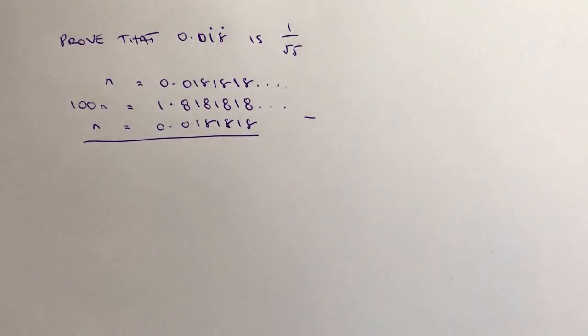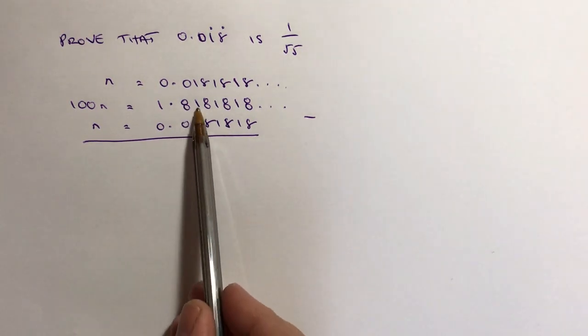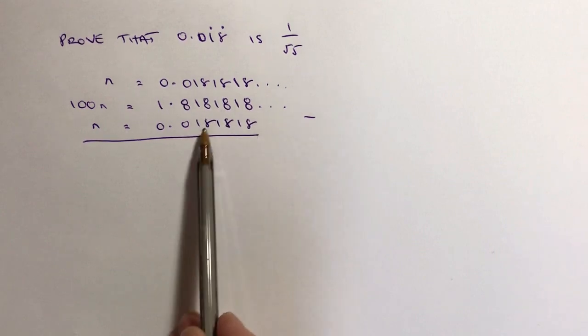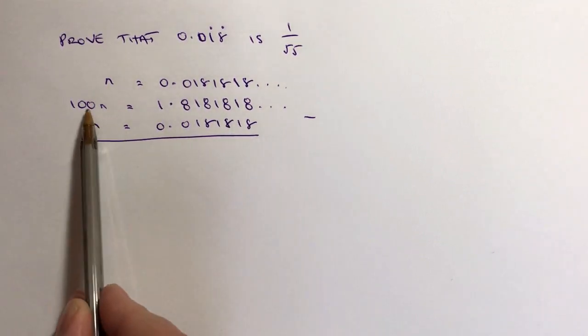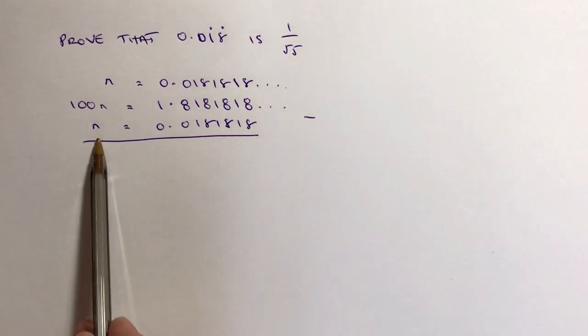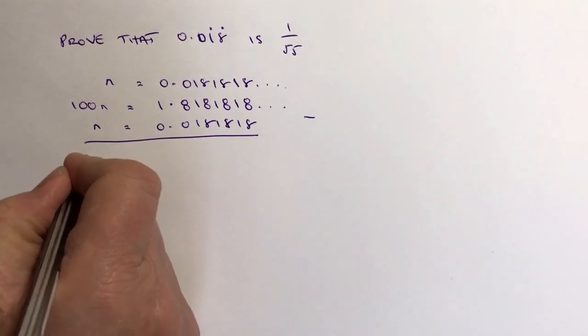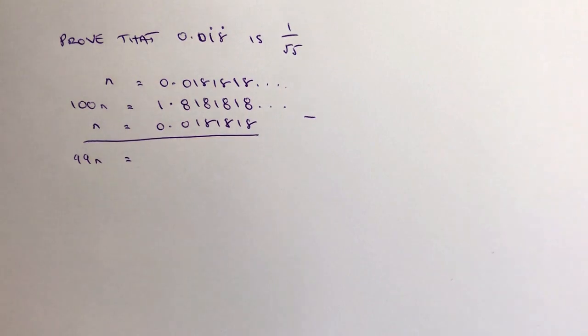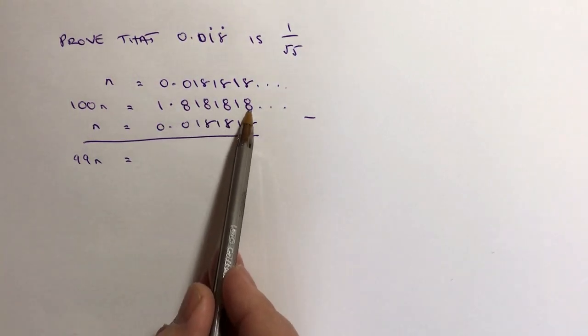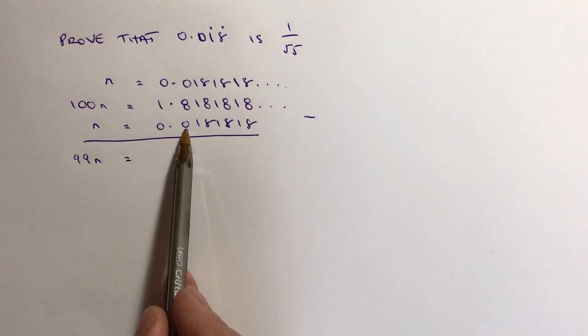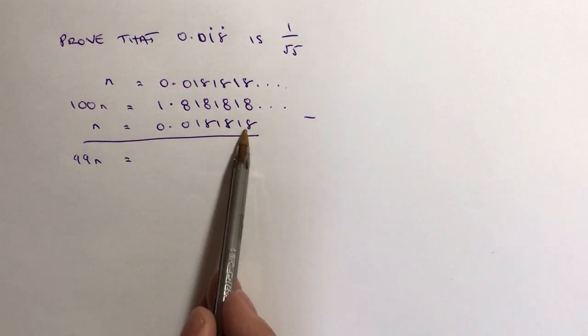That's exactly the same method I've used with all the other videos within this playlist. If I now take away, you can see all of these recurring values I lose, and I end up with 100n take away n, which is going to be 99n, and that equals 1.8.